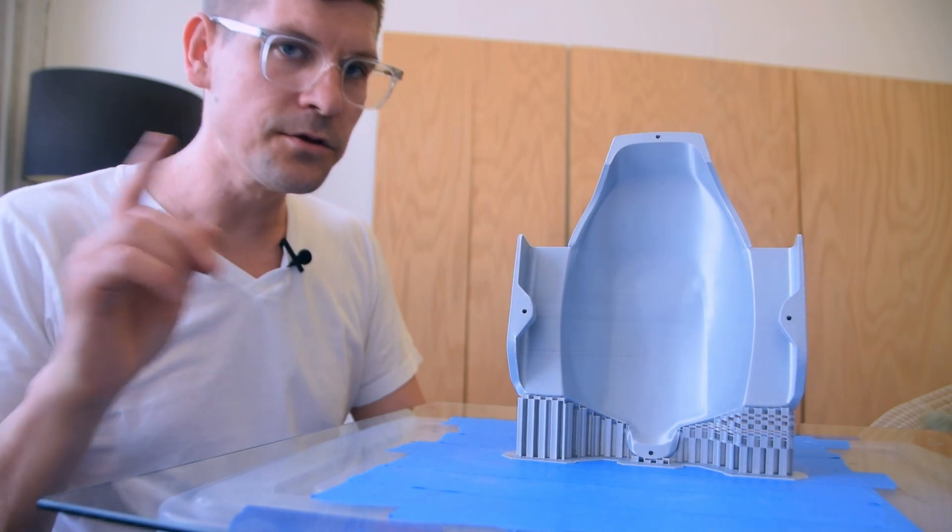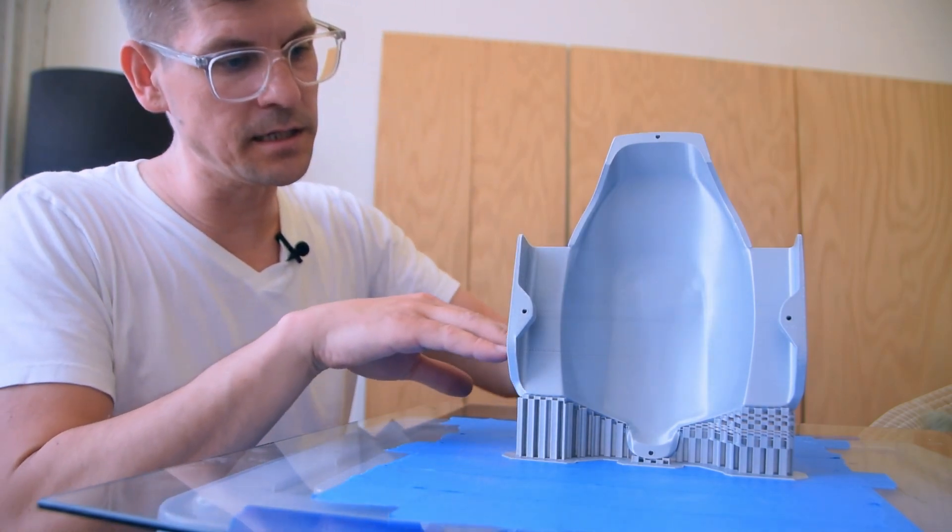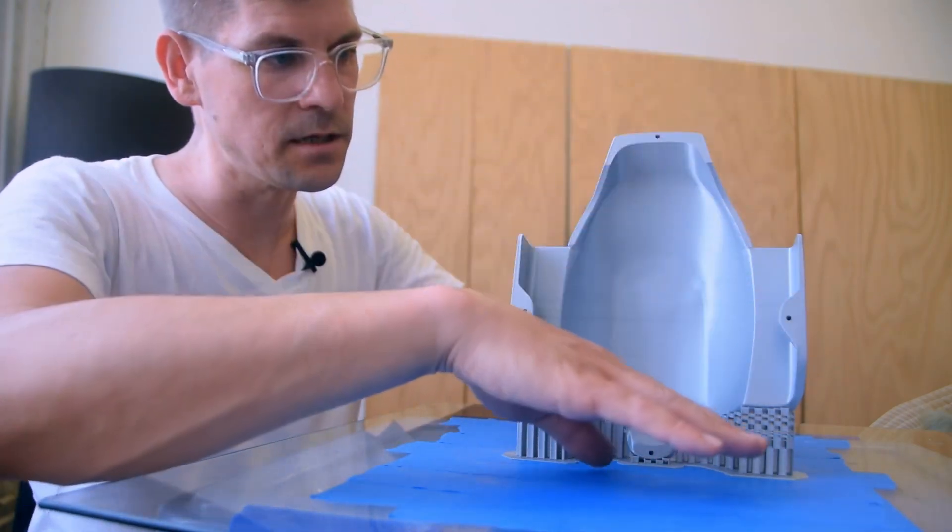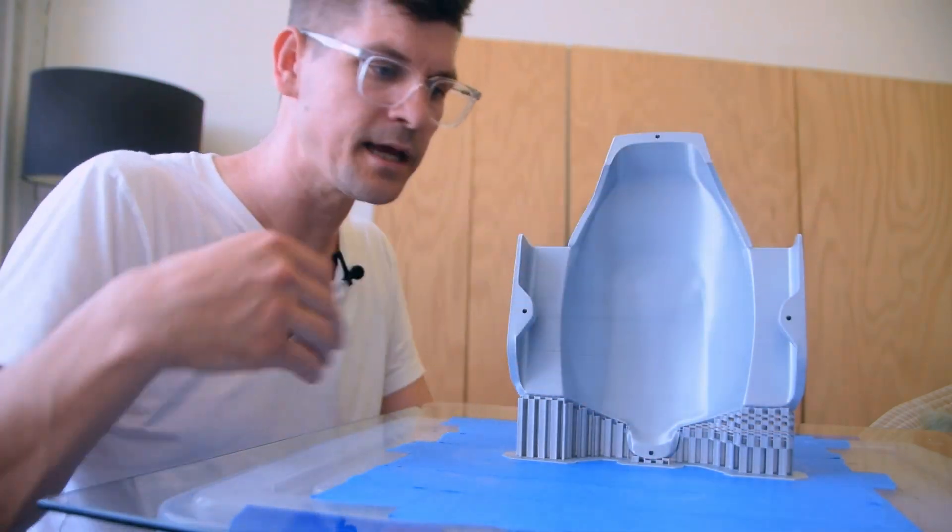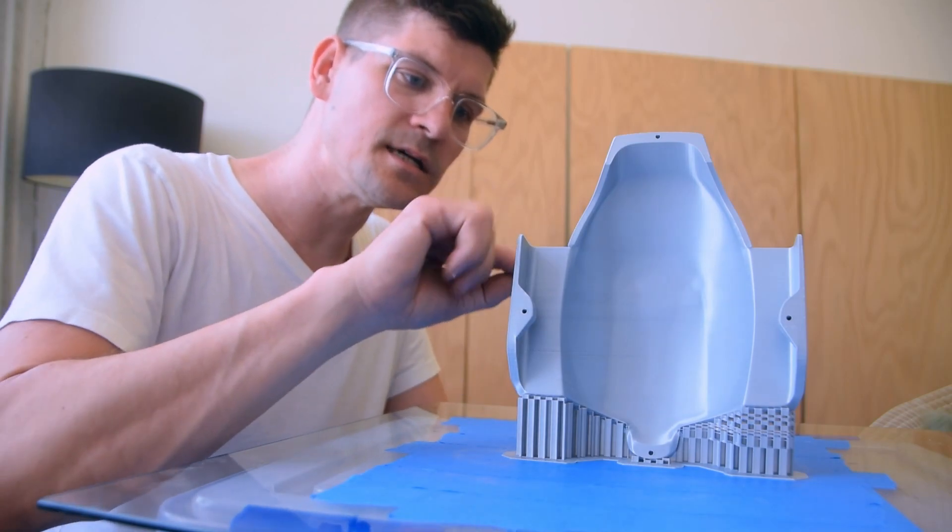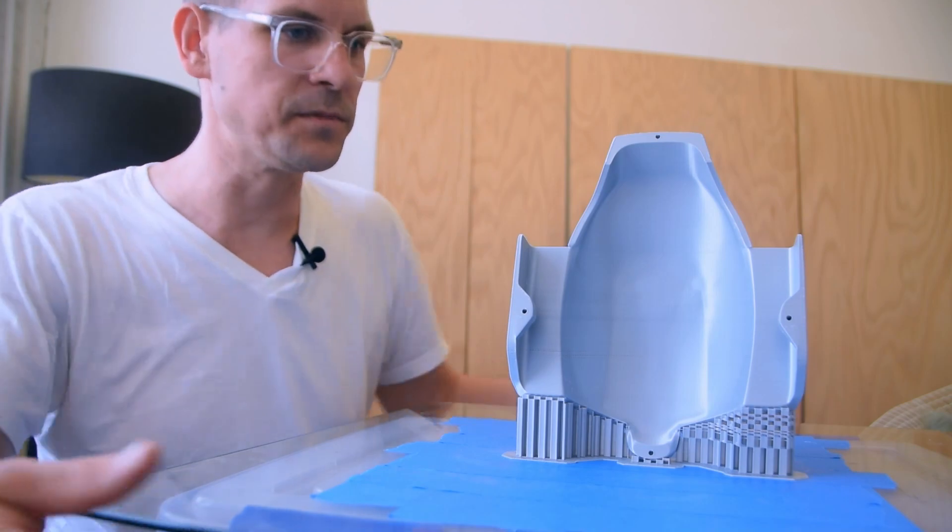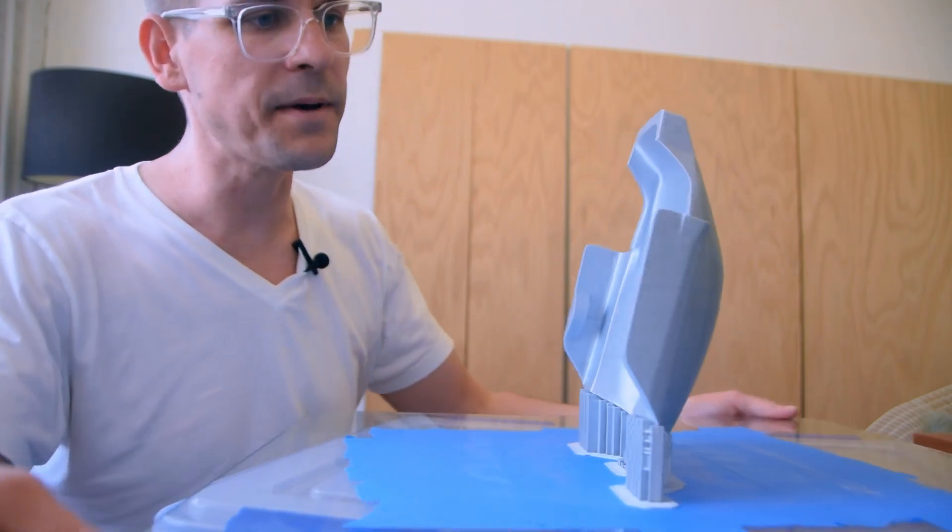Another side note about printing in this orientation is all of the print lines are going, well in this case I guess horizontal but when it's laying flat it'll be vertical. And what that does is it gives me absolutely the best quality surface.